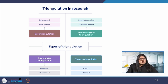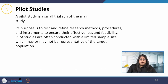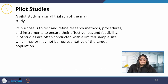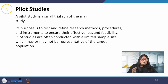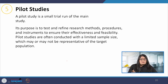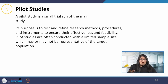Triangulation helps us get a more complete understanding of the research problem. The fifth important point is the pilot study — a small trial run of the main study. Any potential problem can be identified in advance so that it can be corrected. A pilot study helps us assess the usability and acceptability of an approach before it can be used at a larger scale.